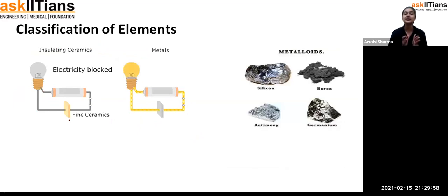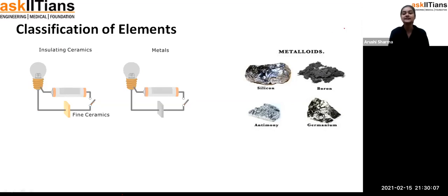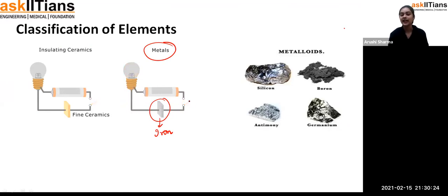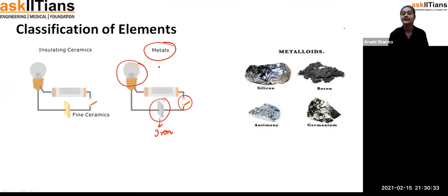Pure substances or elements are classified into three categories: metals, non-metals, and metalloids. If we look at metals first — take iron as an example. When iron is placed in a circuit, there is a flow of electricity and the bulb glows. That means metals are good conductors of electricity because they allow the passage of current through them.